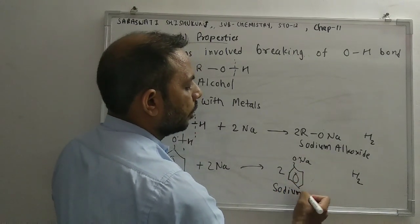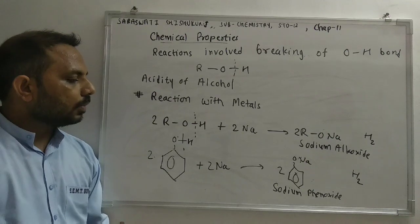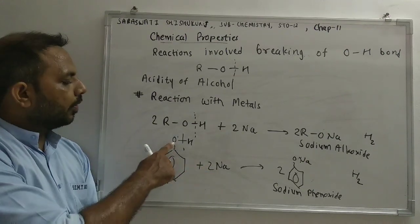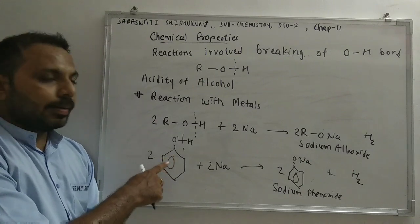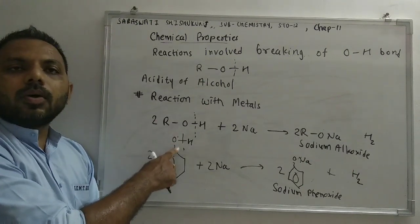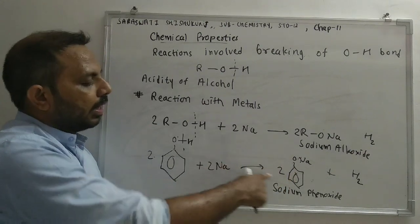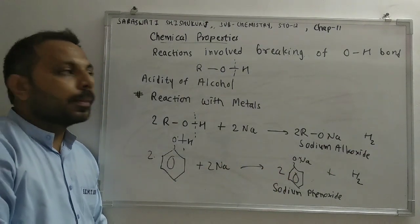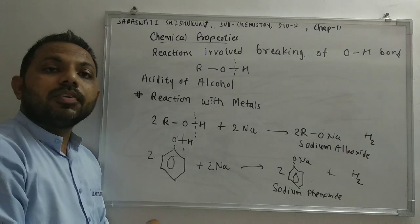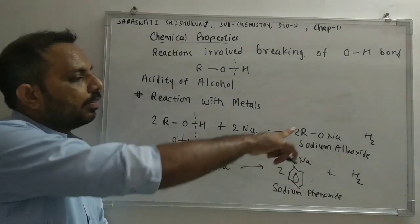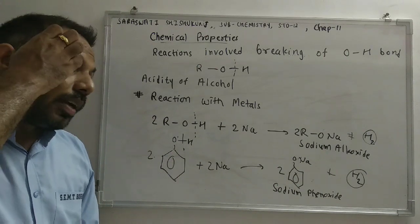Phenol reacts with sodium, the bond between oxygen and hydrogen is broken, H₂ is formed, and phenoxide is left. The oxygen with a negative charge on the benzene ring is known as phenoxide. Phenoxide reacts with sodium to form sodium phenoxide. In every case, hydrogen is released when alcohol reacts with any metal.